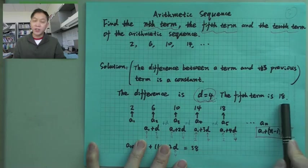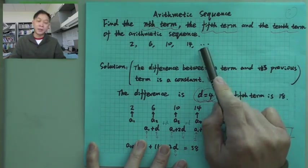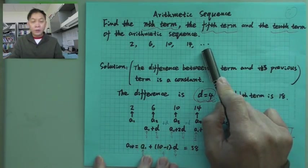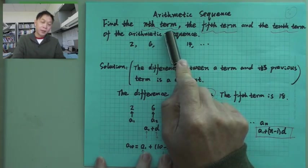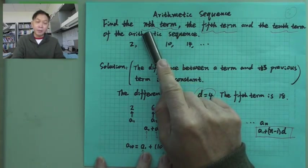And the 5th term we already figured out is 18 right here. Now, how do you find out the general formula? The nth term.